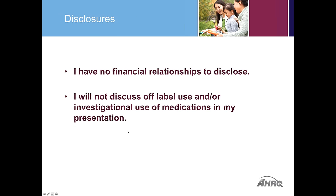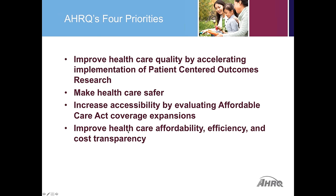AHRQ has four priorities. Priority number one is to improve healthcare quality by accelerating implementation of patient-centered outcomes research. The Affordable Care Act created a national initiative to harness the potential of patient-centered outcomes research. As part of this effort, AHRQ is charged with investing in developing patient-centered outcome research methods, training patient-centered outcome researchers, and disseminating patient-centered outcome findings.